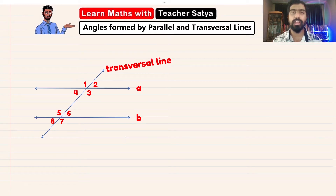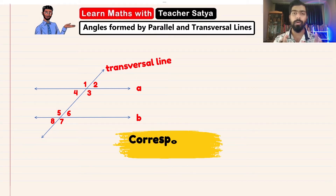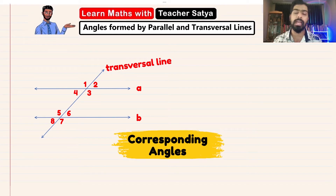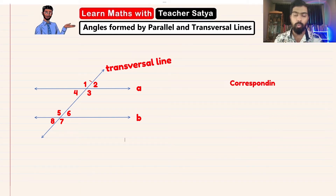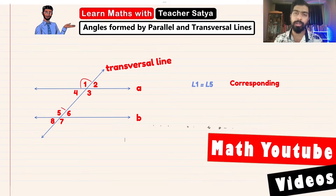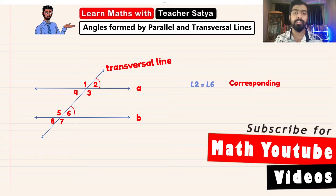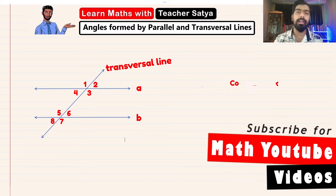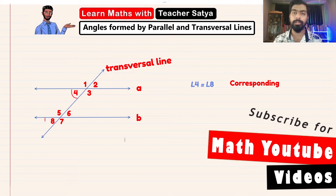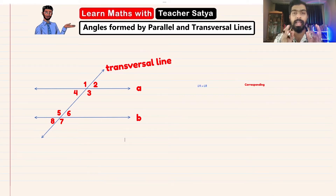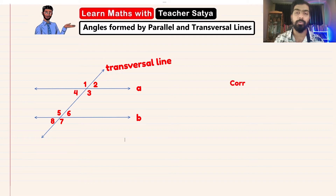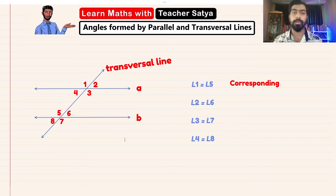The first type of angle I'll be talking about is what we call corresponding angles. Angle 1 will always be corresponding to angle 5, angle 2 will be corresponding to angle 6, angle 3 will be corresponding to angle 7, and angle 4 will be corresponding to angle 8. Corresponding angles will always be equal.